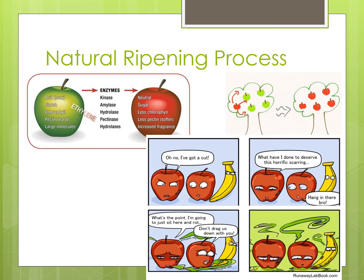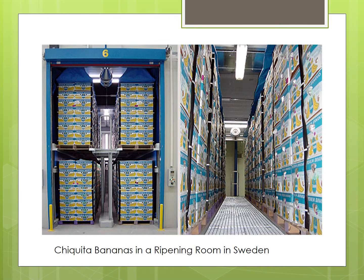To preserve the fruit for sale or use, farmers harvest the fruit unripe and commercially ripen it when it is ready for use. To control the ripening of fruit, a company takes crates of unripe fruit and places them in a well-sealed fridge. From there, they begin releasing manufactured ethylene at a constant rate until the room is at their desired concentration of ethylene.